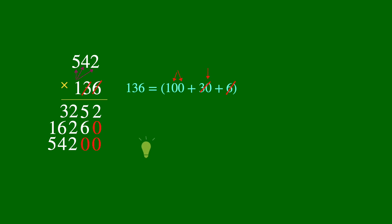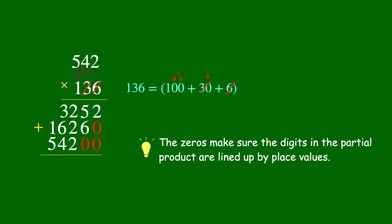Now that the digits in the partial product are lined up by their place values, we can add them together to get 73,712 as the final answer.